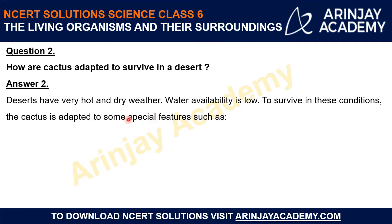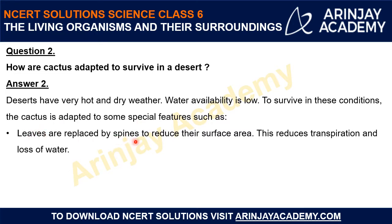The first feature: leaves are replaced by spines to reduce their surface area. The cactus plant leaves are replaced by spines, which reduce the surface area. By this, transpiration — the loss of water — will also reduce drastically. Transpiration is a process by which a plant can give off 90% of their water. So by reducing the surface area, we prevent the loss of water.